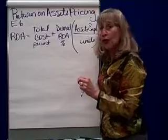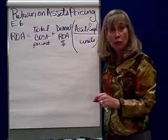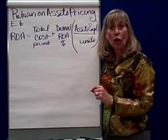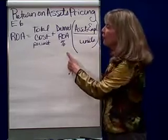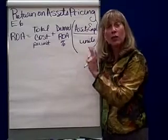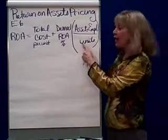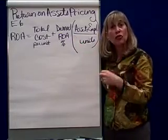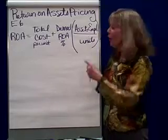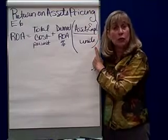The return on assets price is going to be equal to the total cost per unit. That total cost includes both your production costs and your selling, administrative, and general costs. To that total cost, we add a desired return on assets percentage — this will be given to you. That return is multiplied by the assets employed, in other words, how much resources you had to acquire and use to go into this business, divided by the number of units you're going to produce each year.